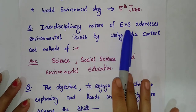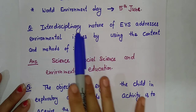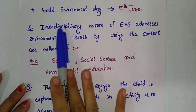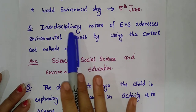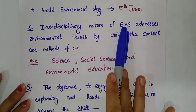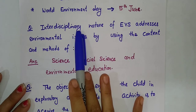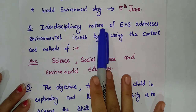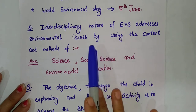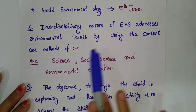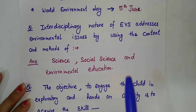Next question: the interdisciplinary nature of EVS addresses environmental issues by using the content and method of multiple disciplines. I have studied this term — interdisciplinary nature — in the first video on the concept of EVS. The nature of EVS is composite, interdisciplinary, or multidisciplinary. This means EVS is a combination of three subjects — it includes science, social science, and environmental education. So that is the right answer for this question.